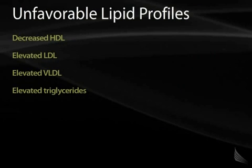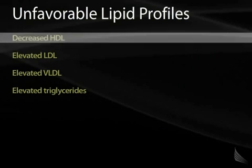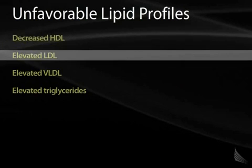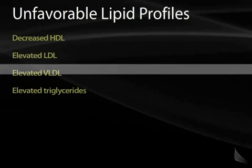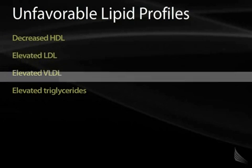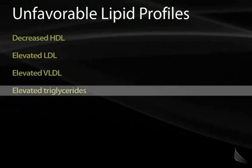Unfavorable lipid profiles include a decreased HDL of less than 55, elevated LDL greater than 100 in most cases, elevated VLDL, and elevated triglycerides.